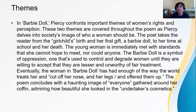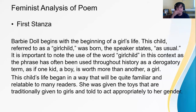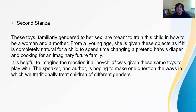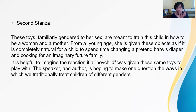In the first stanza, the poem talks about the beginning of a girl's life — starting with 'girlchild born' — and the child growing up with the toys she was given, which shape her perception of what beauty looks like. The second stanza shows that these toys, familiar and gendered to her sex, are meant to train the child in how to be a woman and a mother, following what the doll looks like as the perfect image of her future self.